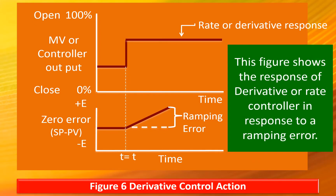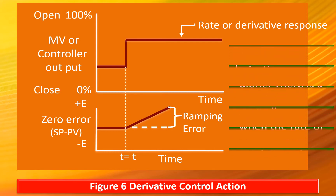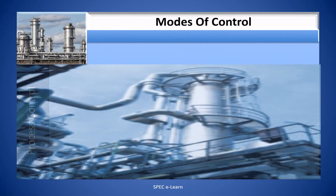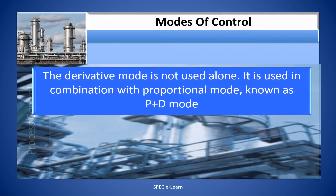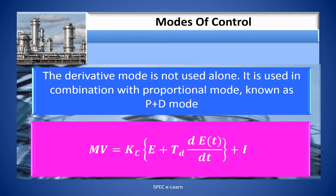This figure shows the response of a derivative or rate controller in response to a ramping error. Observe the derivative response alone — there is a step change in the controlled output when the rate of error change is detected. In real-world industrial practice, the derivative mode is not used alone; it is used in combination with proportional mode, known as PD mode. The MV in a PD mode is expressed as: MV = Kc × [e + Td × (dE/dt)] + i.